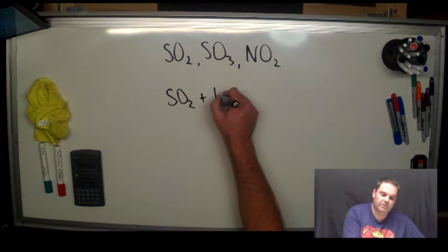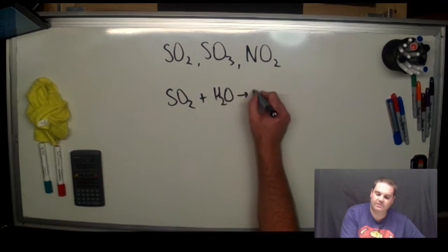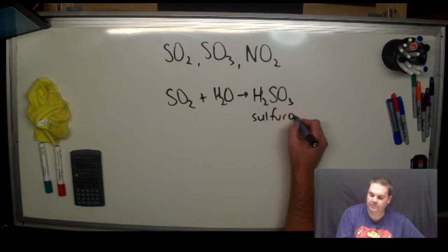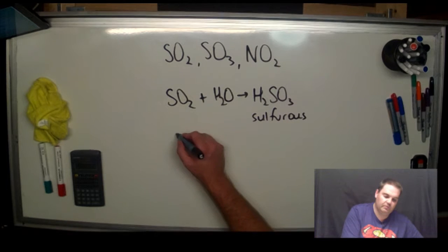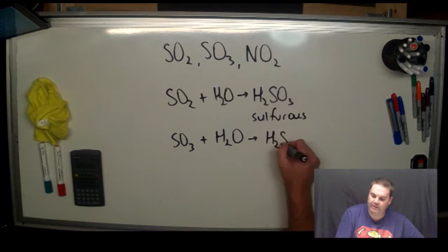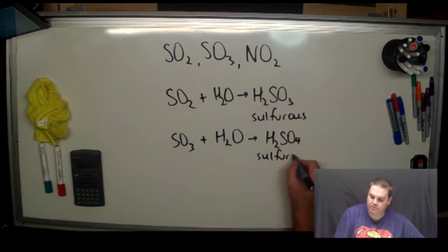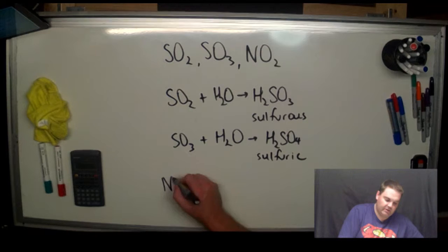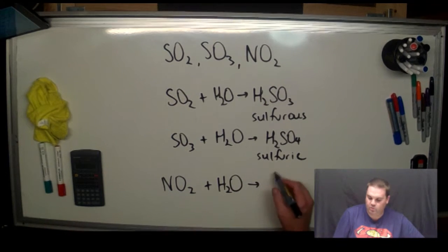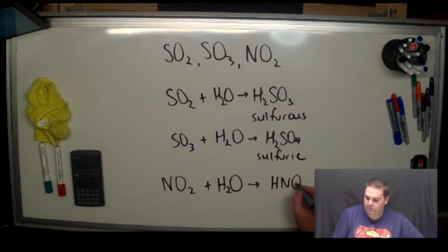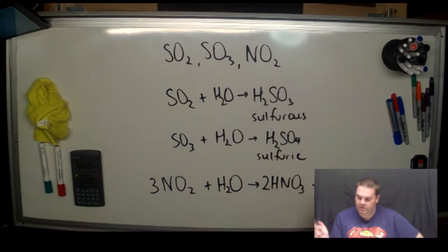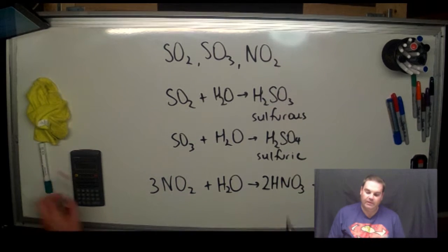Sulfur dioxide in water gives us sulfurous acid. If we do sulfur trioxide and water, we can get sulfuric acid, and this is one of the equations you're going to practice a lot. Nitrogen dioxide plus water gives you nitric acid plus nitric oxide. Balance it up, three there, two there.